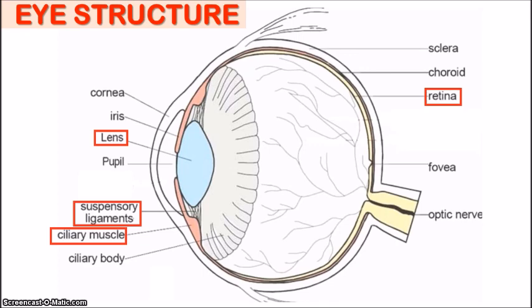Now coming to the back of the eye we have the sclera, which is a tough white fibrous layer surrounding the entire eyeball. The choroid is a darkly pigmented region of the eye that prevents light rays from scattering and reflecting in the eye. This is also where you would find blood vessels located to supply the eye with oxygen and nutrients. And the retina — this is an important part because this is where the light rays will be focused, and it consists of the light-sensitive cells known as photoreceptors.